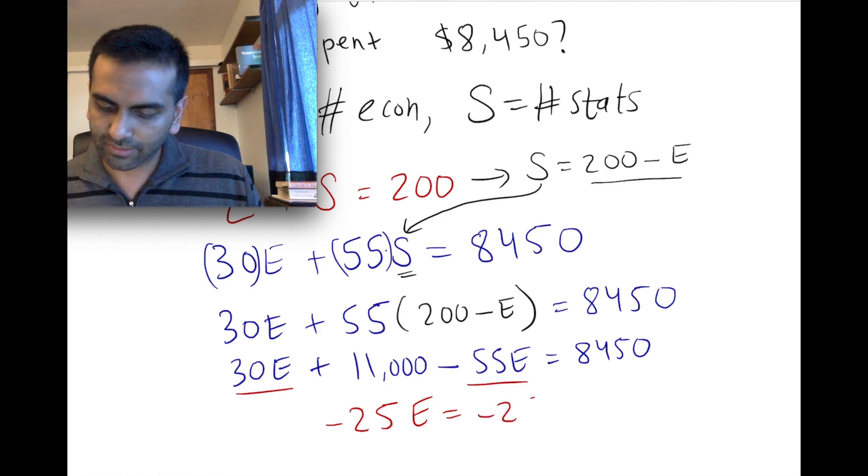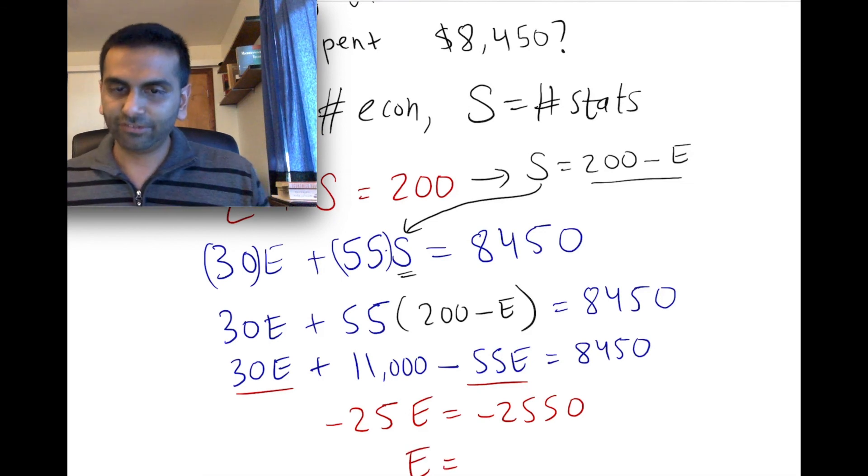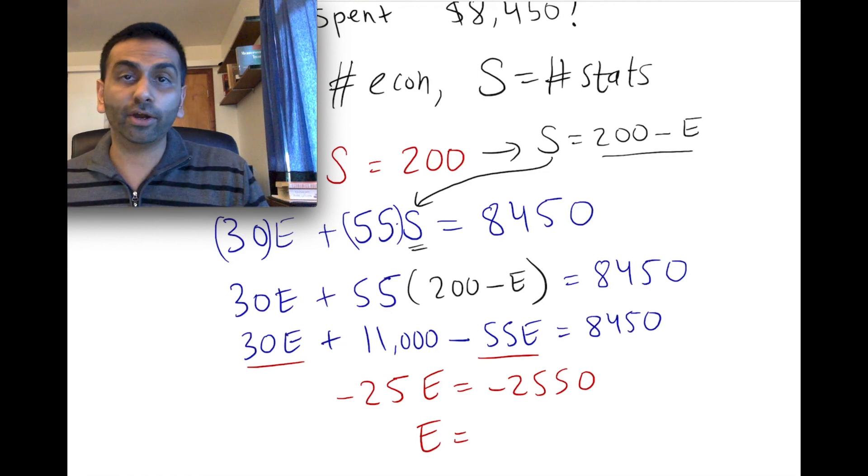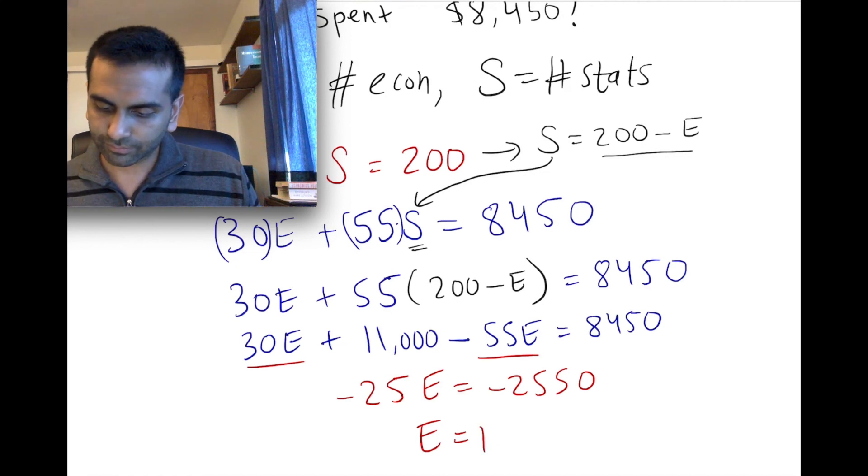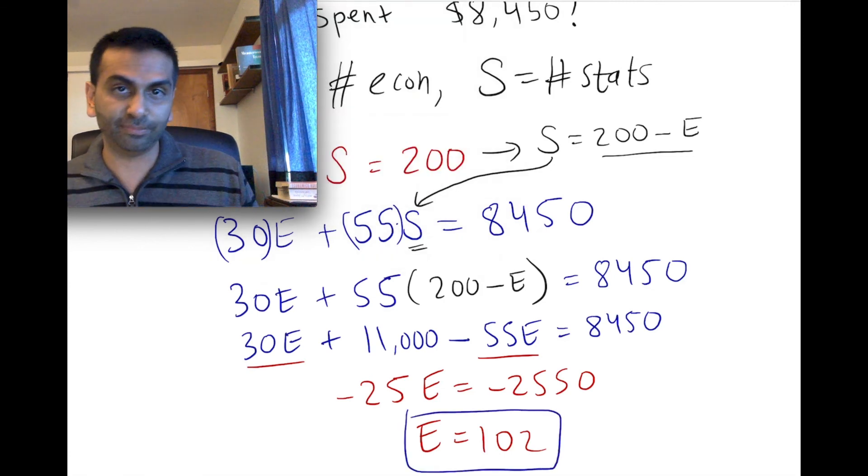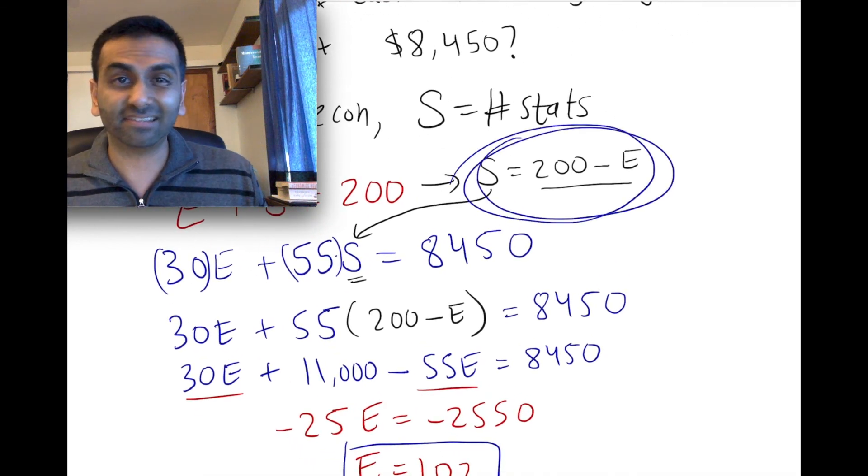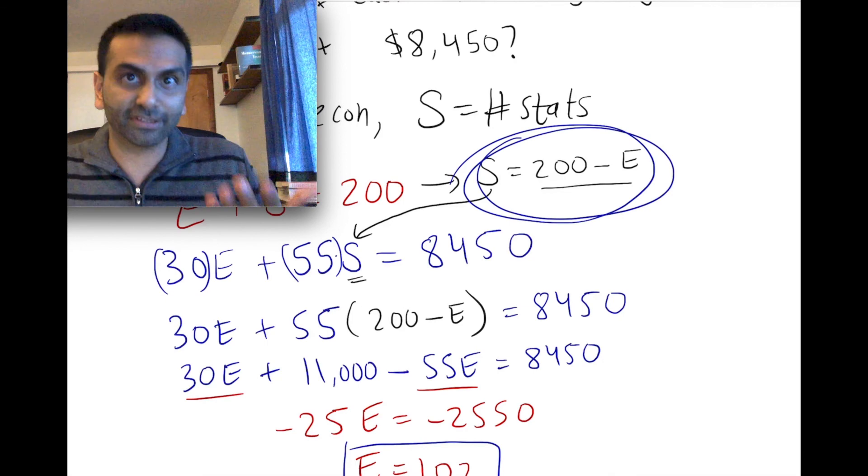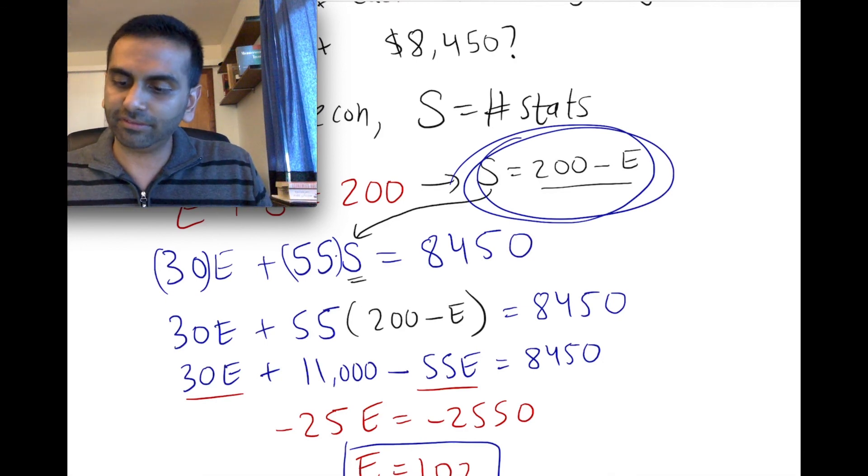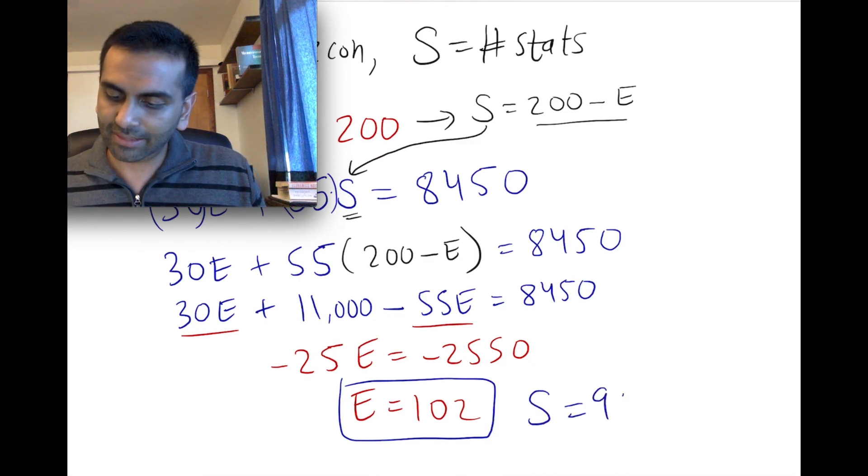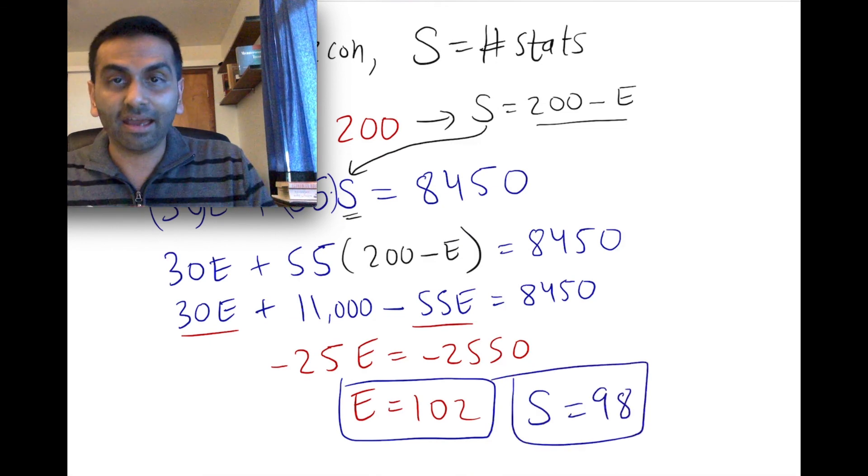And finally, divide both sides by negative 25. So that divided by negative 25 gets me positive 102. So now I have my answer. I bought 102 econ textbooks. And I can easily find the stats textbooks because I have this equation right here. The stats textbooks is literally 200, the total textbooks that I bought, minus the econ ones. So 200 minus 102 is 98. So I bought 98 stats textbooks. And that's your final answer.